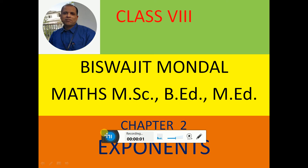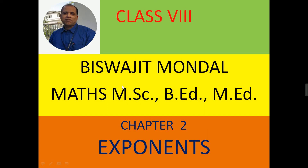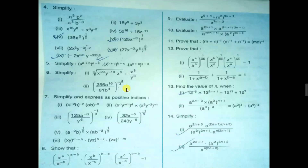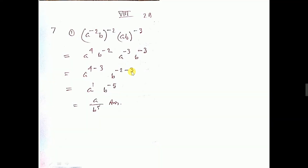For Class 8 students, I will do exponents — a few sums from here. See sum number 7.1: a to the power minus 2, whole to the power minus 2. That means minus 2 into minus 2 equals plus 4, so a to the power 4.